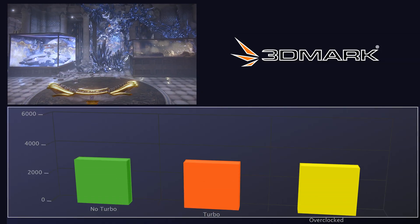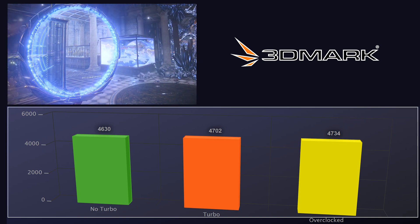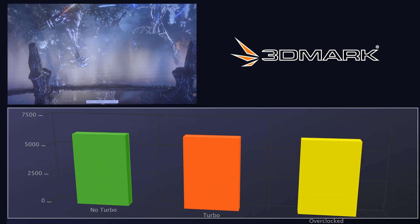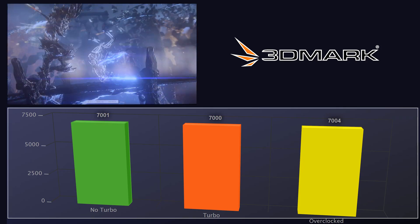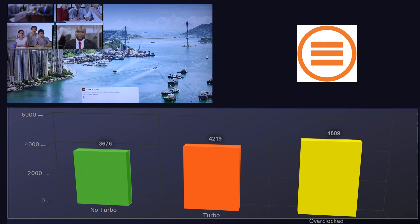Moving on to Time Spy and Fire Strike — both definitely utilize the GPU, and I have a 1080 Ti — but I was curious what effect overclocking would have. For Time Spy: stock no turbo was 4630, enabling turbo got 4702, and overclocked got 4734. Fire Strike was basically the same across the board: 7001, 7000, and 7004 — practically identical. PC Mark 10 showed a decent bump though, going from 3676 with no turbo and no overclock, up to 4219 just by enabling turbo, then 4809 with turbo and overclock.